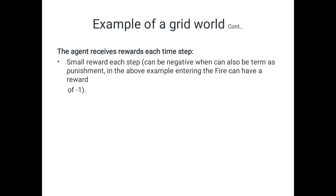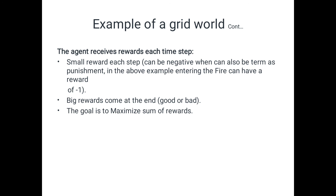Suppose the agent moves toward the diamond — how are rewards gained? For each and every successful step the agent receives at least a small reward. Finally, when it reaches the diamond it receives a big reward, whether it finds a good or bad solution. The goal is to maximize the sum of rewards. If the agent gets a good result it receives a positive reward; if the agent moves to the fire or any problematic location it receives a negative reward.